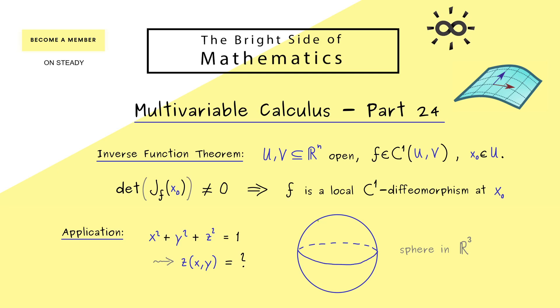However, this might only work locally. So for example, we could just ask, does it work around the north pole here? So you already see, the inverse function theorem here could be helpful. But in order to apply it, we first need to find the correct function f.